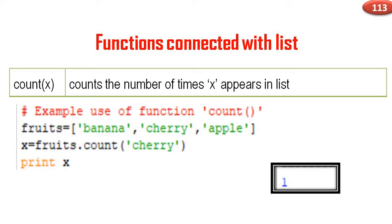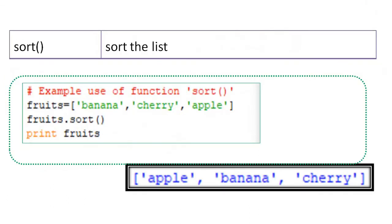sort() sorts the list. For example, using list fruits assigned banana, cherry, apple — after fruits.sort() the list is printed in alphabetical order: apple, banana, cherry.